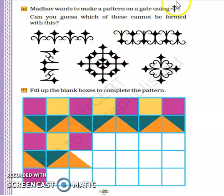Today you have to help Madhav. He wants to make a grill with this design. Can you guess which of these cannot be formed with this? Which design from these won't be made?